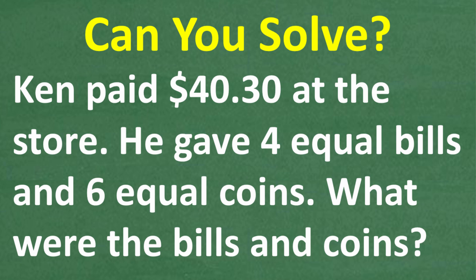Ken paid $40.30 at the store. He gave four equal bills and six equal coins to the cashier. What were the bills and coins?